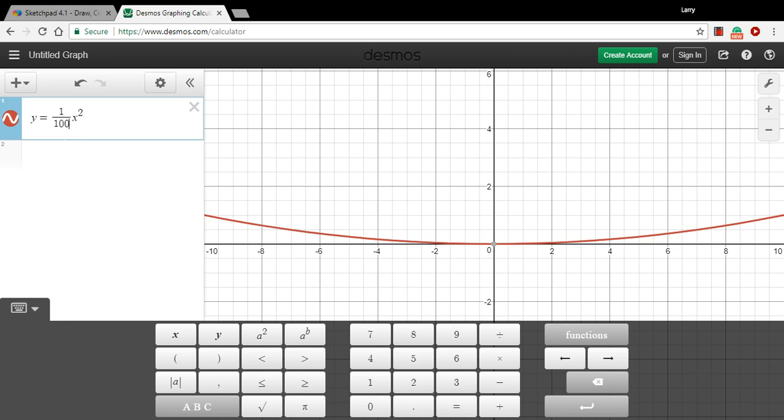So if this coefficient is between zero and one, or we could do this negative two, zero and negative one, some fraction between zero and one, you get a wide parabola. When it's a non-fractional number, it gets narrower and narrower. So there's our ten and here's our one tenth.